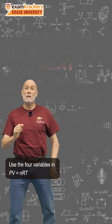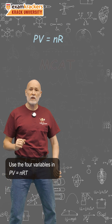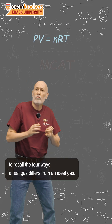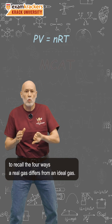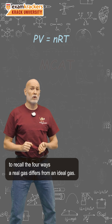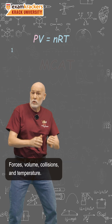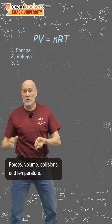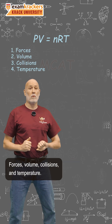Use the four variables in PV=nRT to recall the four ways a real gas differs from an ideal gas—forces, volume, collisions, and temperature.